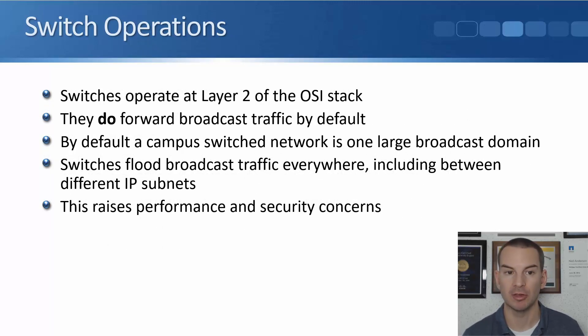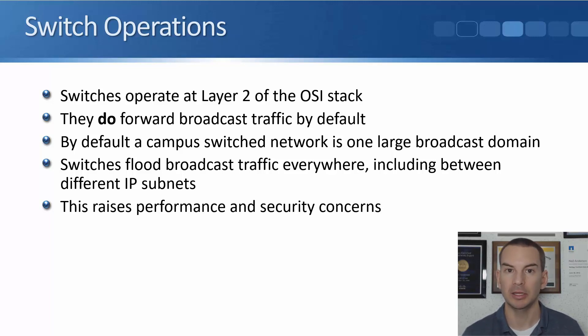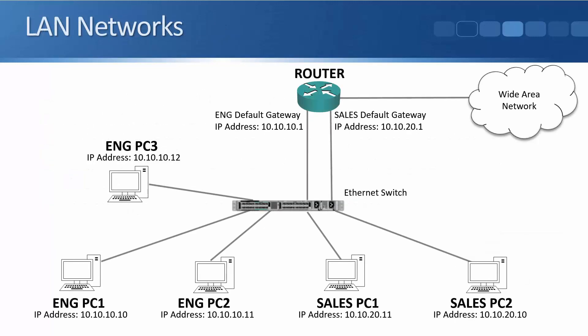Switches operate at layer 2 of the OSI stack and they do forward broadcast traffic by default, unlike routers. So by default, a campus switched network is one large broadcast domain. Your switches flood broadcast traffic everywhere, including between different IP subnets, and that raises performance and security concerns. In a simple LAN with one switch, engineering PCs and sales PCs are plugged into the switch. The engineering and sales PCs are in different IP subnets at layer 3, and we've got a router to route traffic between them.